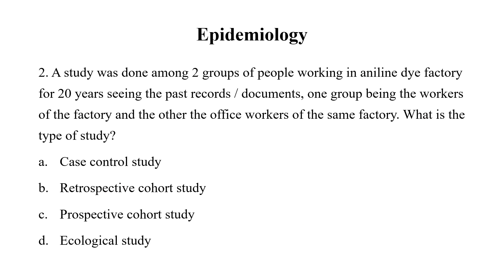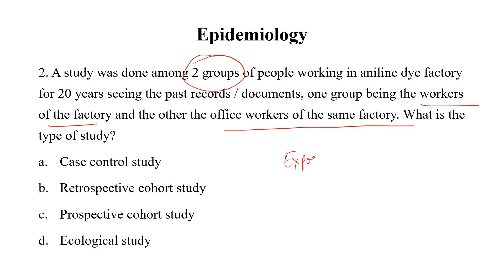A study was done among two groups of people working in an aniline dye factory for 20 years, using past records or documents — one group being the factory workers and the other being the office workers of the same factory. What is this type of study? Options are Case Control, Retrospective Cohort, Prospective Cohort, and Ecological Study. We have two groups: one is the exposed group and the other is the non-exposed group, so it is definitely a cohort study.